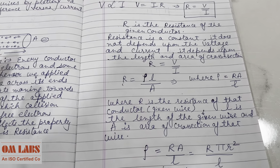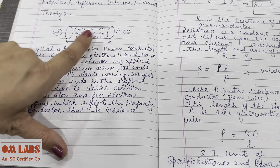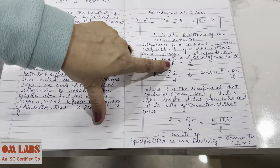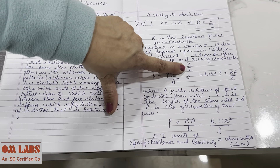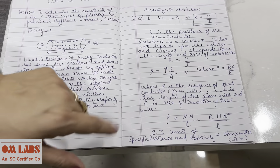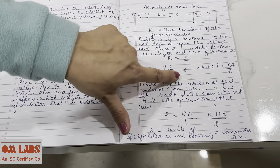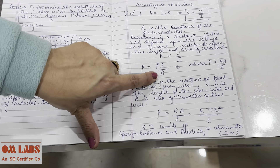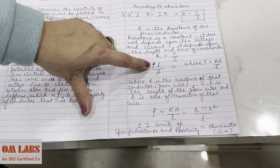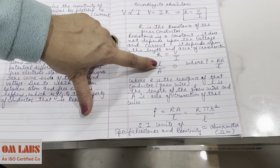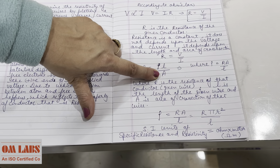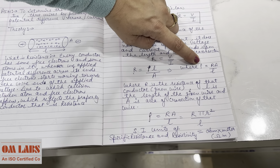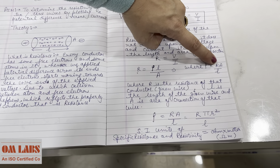According to Ohm's law, V is directly proportional to I, which gives us V = IR, where R is the proportionality constant. Resistance does not depend upon voltage and current — it depends upon the length and area of cross section. We come across the equation R = ρL/A, where ρ is the resistivity of the conductor, L is the length, and A is the area of cross section.